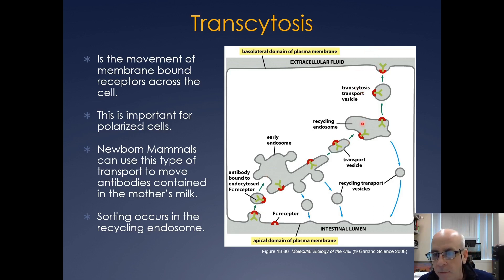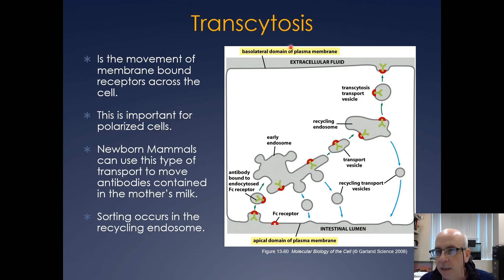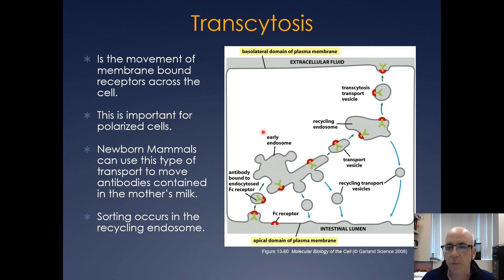The major sorting occurs in the recycling endosome. You can see the recycling vesicle going here and everything else going to the other side. So you'll have antibodies in the intestinal lumen, and then they can get past the intestinal epithelium via this transcytosis pathway.